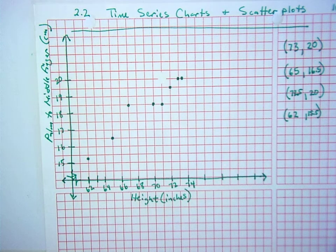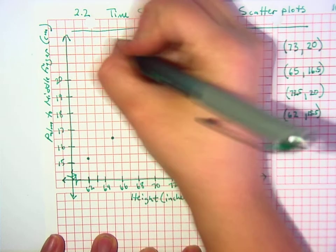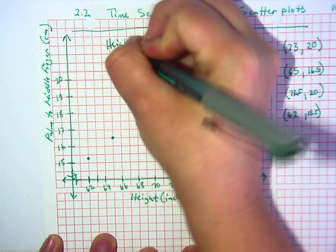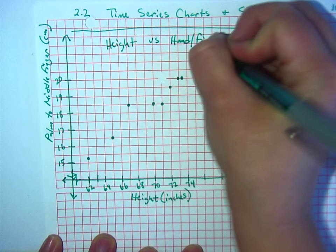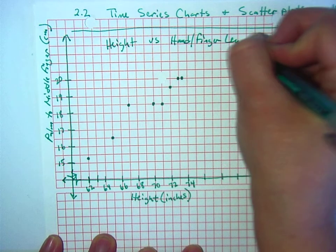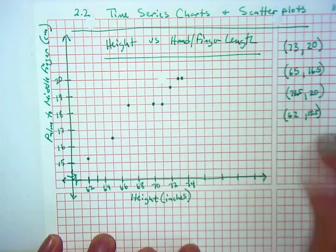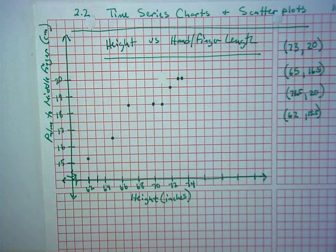Everybody cool on scatter plots? Make sure you have a label on the top. Height versus hand finger length. I know it's not very exciting, but does this make sense to you? Cool.